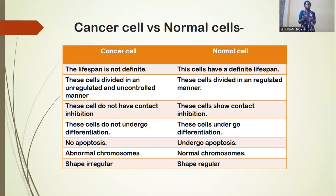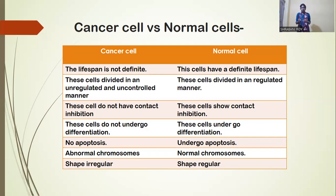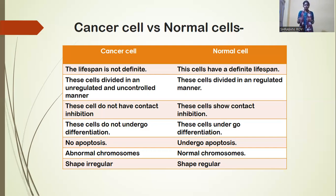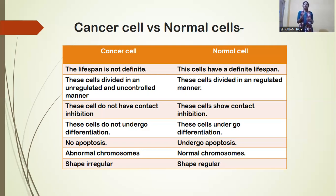Cancer cells do not have contact inhibition, but in the case of normal cells, they do have contact inhibition. Also, cancer cells do not undergo differentiation, but normal cells do undergo differentiation.